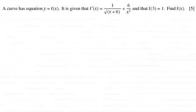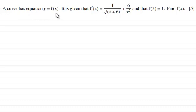Hi there. Now for this question we're given that a curve has equation y equals f of x and it is given that f dash x or f prime x equals 1 divided by the root of x plus 6 plus 6 divided by x squared and that f of 3 equals 1 and we've got to find f of x for 5 marks.